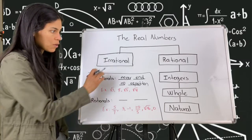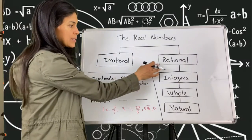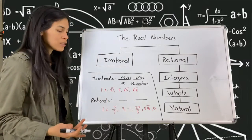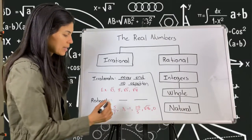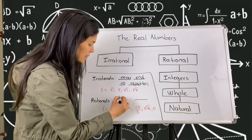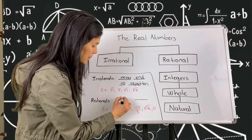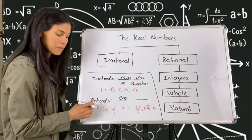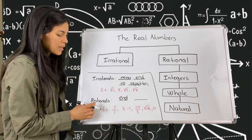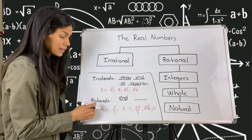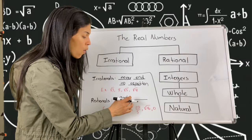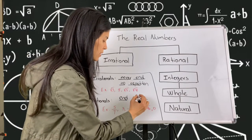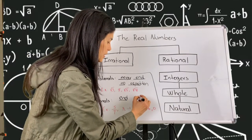Now rational numbers are the opposite — they are decimals that end. That goes in your blank space for the rationals: decimals that end, or they have a repeating pattern.